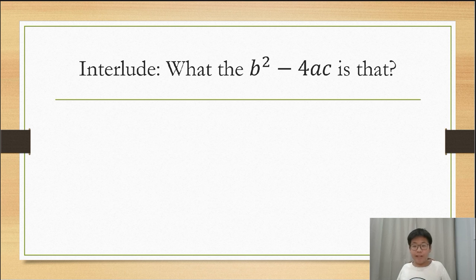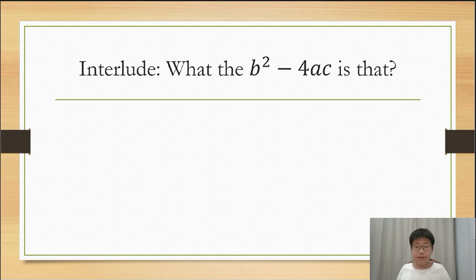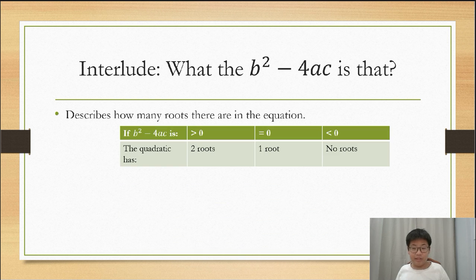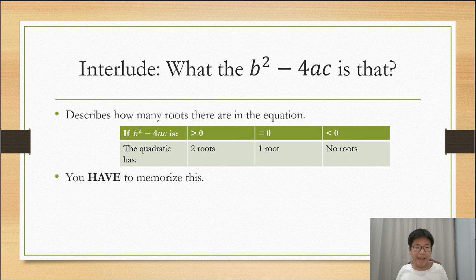So you might notice one of our old friends, b² minus 4ac, in the formula. This is called the discriminant. It is also very helpful later on. This can provide a way to describe how many roots there are in the quadratic equation. You can see this table to see why this is important. Once again, you have to memorize this table.